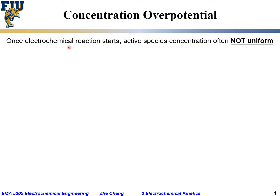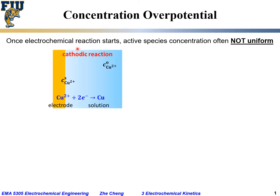However, in practice, once an electrochemical reaction starts, the active redox species — could be the oxidized species, could be the reduced species — the concentration may change, and as a result, it is often not uniform for the active species. Because of that, quite often we would have an overpotential — a potential difference between actual and equilibrium — due to this concentration gradient or concentration variation.